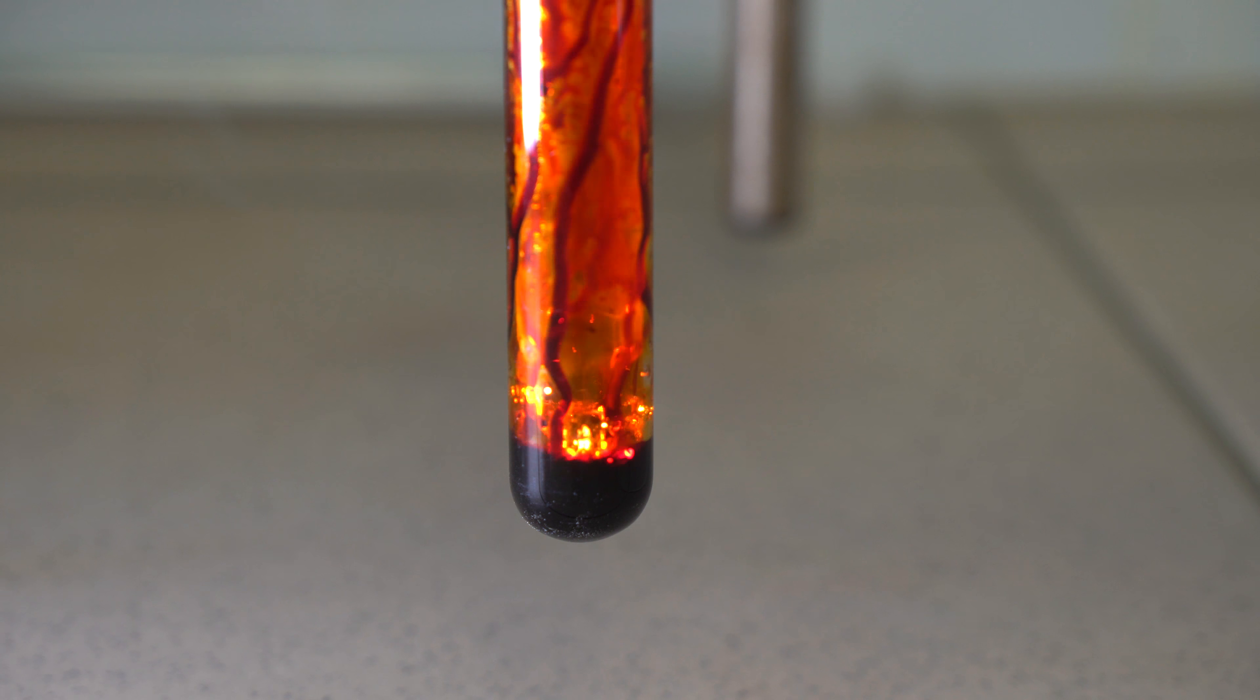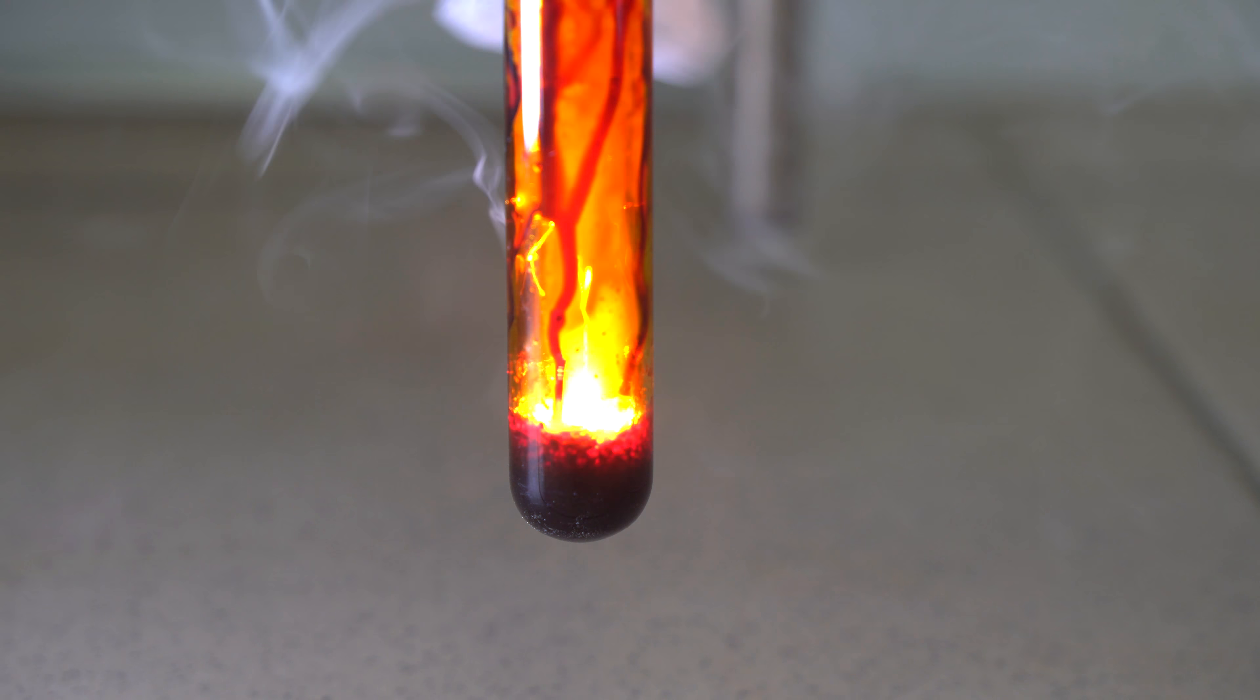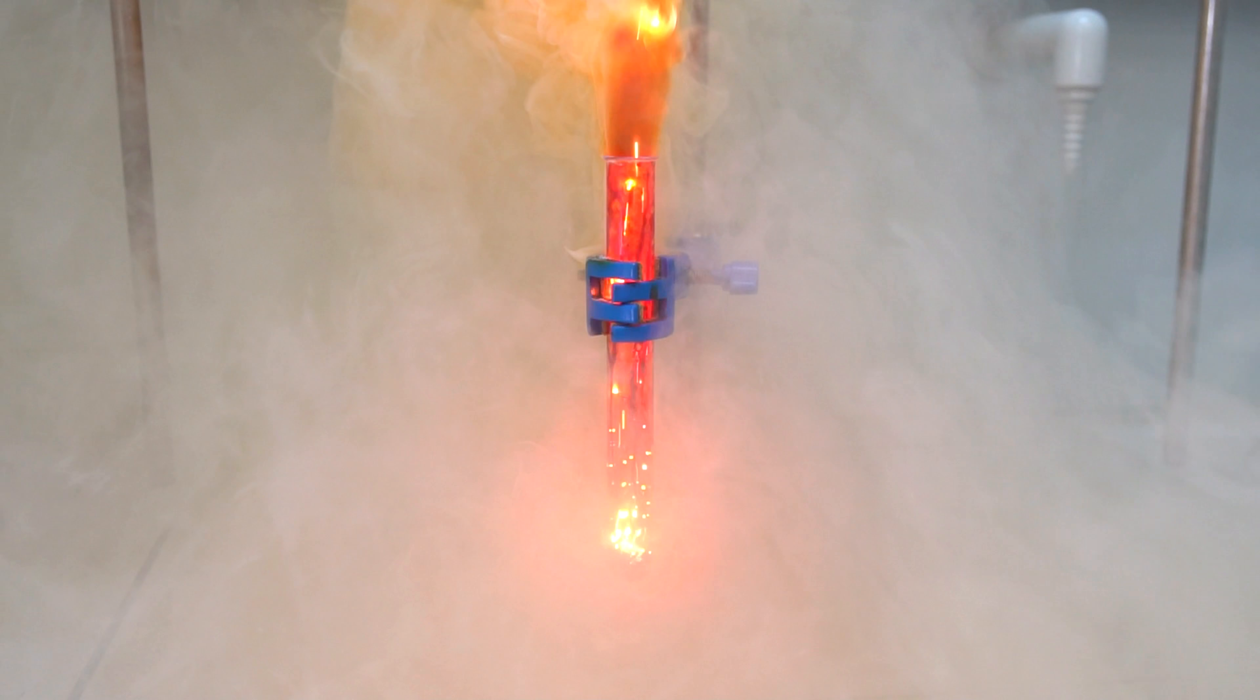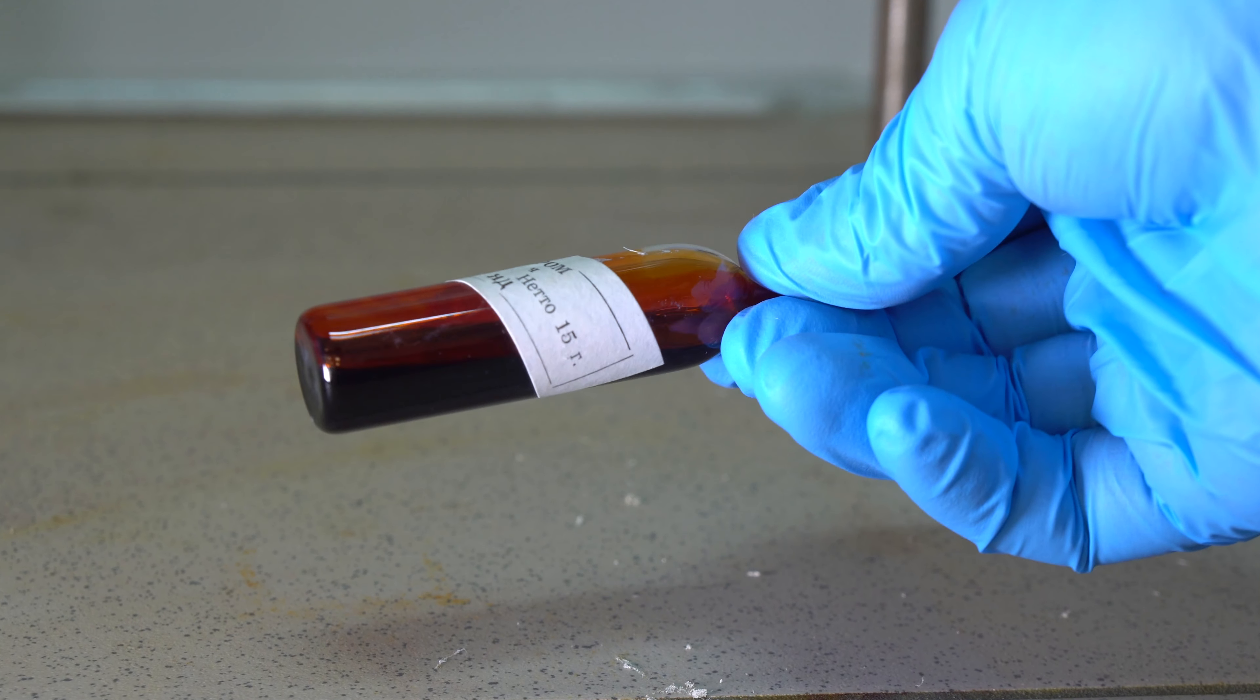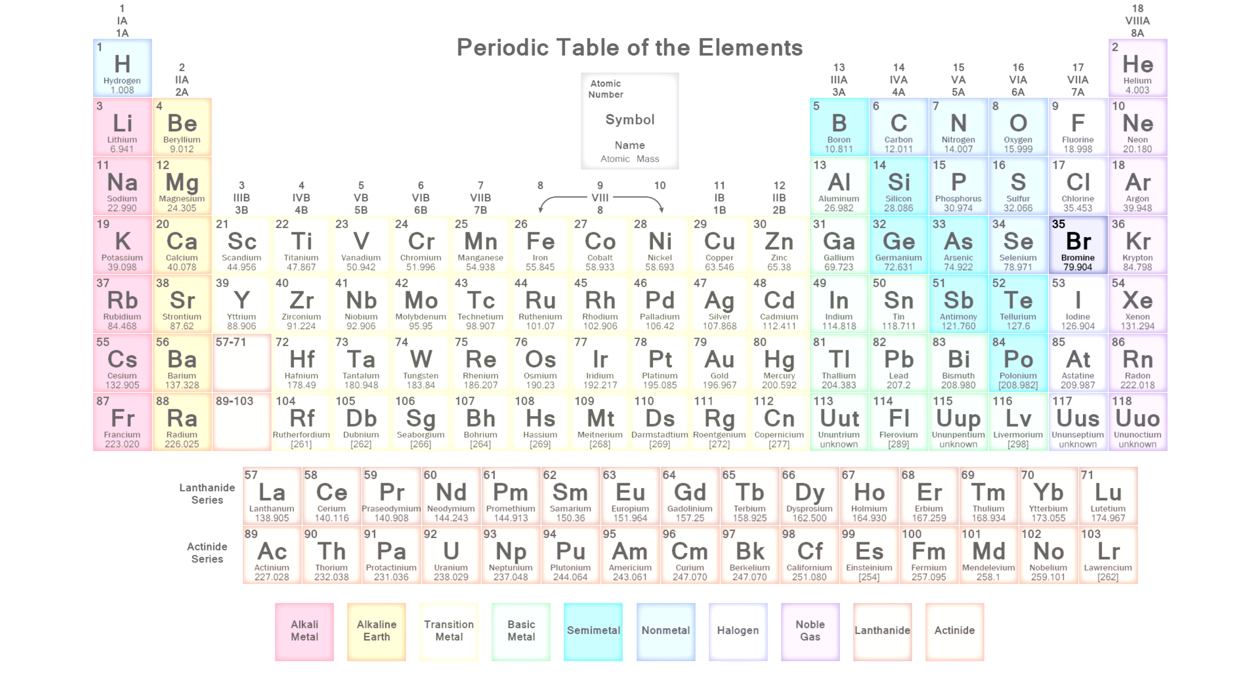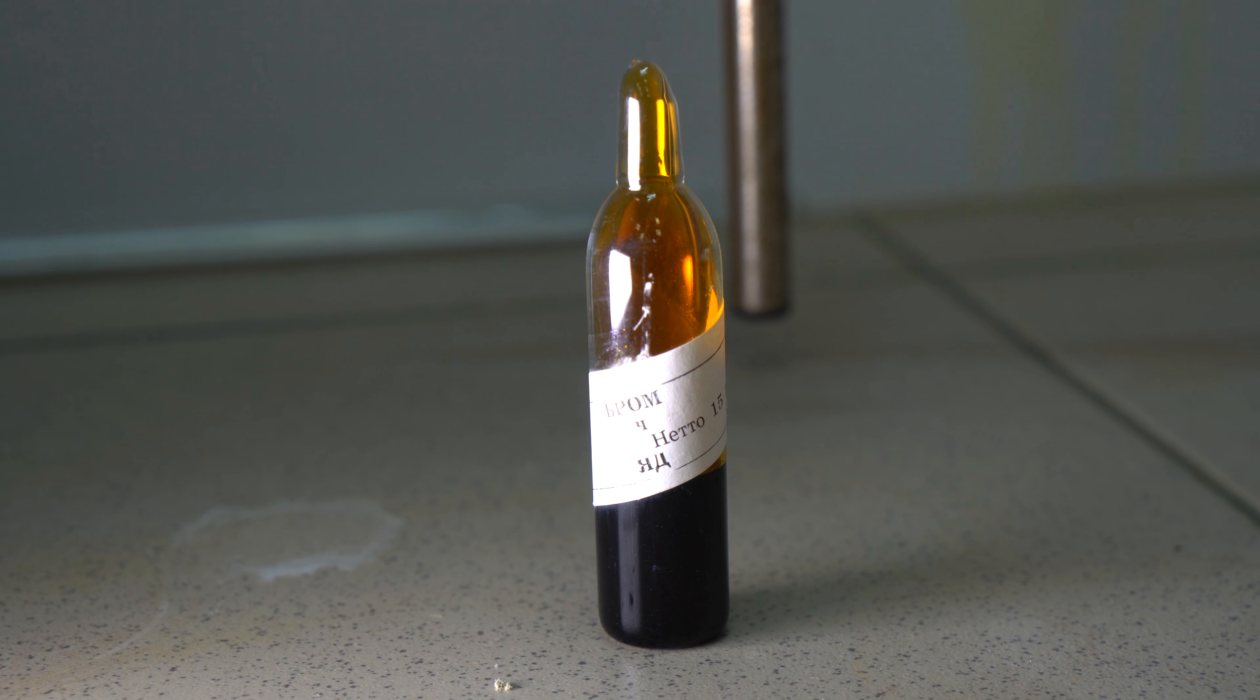Hello everyone! In this video, I am going to tell you about such a dangerous and smelly element as bromine, which is the only element that can exist in a liquid state under normal conditions. In the periodic table of chemical elements, bromine is located in the last but one group of halogens between chlorine and iodine.